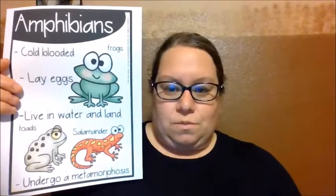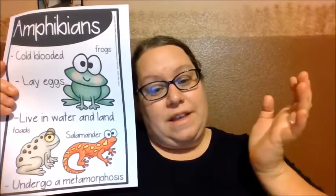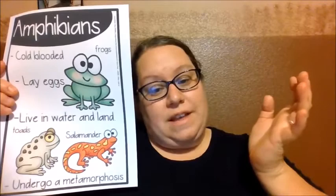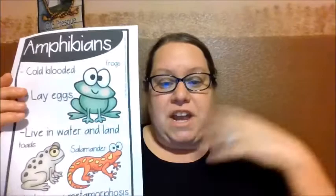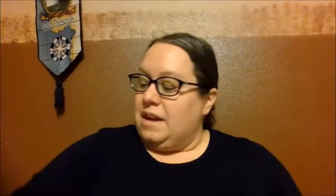Then you have amphibians. Amphibians are also cold-blooded. They lay eggs. They live in water and on land — they can do both. They can breathe underwater or breathe air on land. Examples include toads, frogs, and salamanders. They also undergo metamorphosis — that's the change. Like a caterpillar to a butterfly. Our frog started as a little tadpole that swam with a tail, and then it changes into a frog. That change is what metamorphosis is.